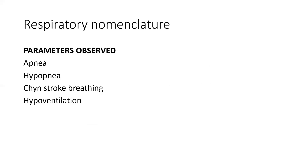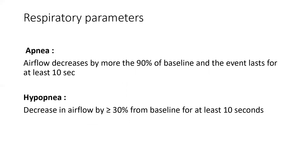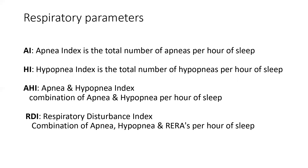What is the respiratory nomenclature? The parameters observed in respiratory events are apnea, hypopnea, Cheyne-Stokes breathing, hyperventilation, and others. Apnea is a decrease in airflow by more than 90% of baseline lasting at least 10 seconds. Hypopnea is a decrease of 30% or more, again for at least 10 seconds. The apnea index is the total number of apneas per hour of sleep, and the hypopnea index is the total number of hypopneas. The apnea-hypopnea index (AHI) is the combination of apneas and hypopneas per hour. The respiratory disturbance index (RDI) also includes respiratory effort-related arousals along with the AHI.